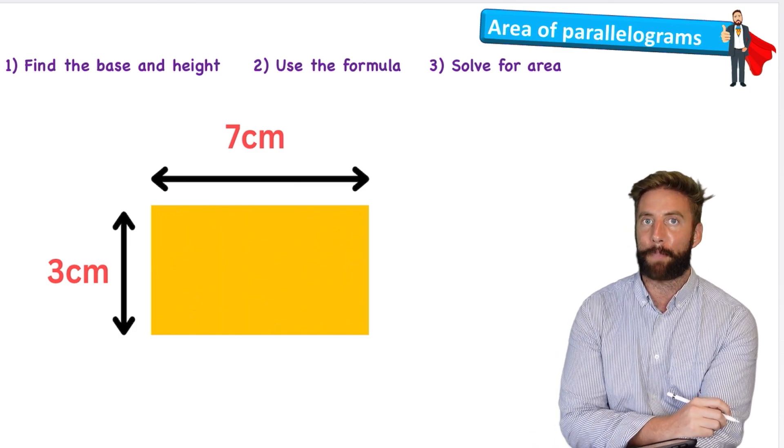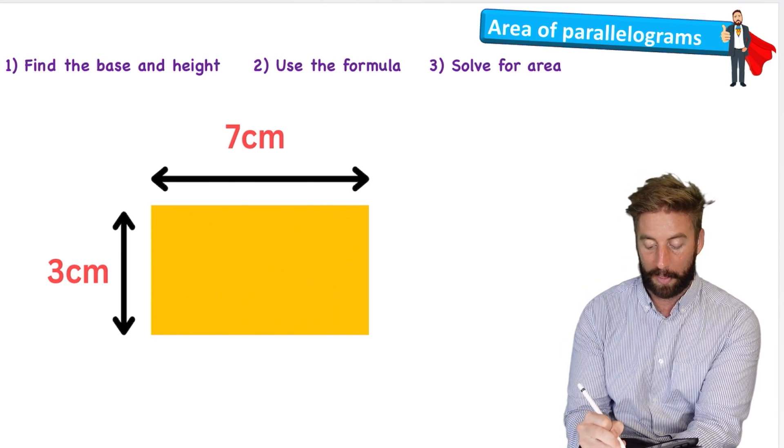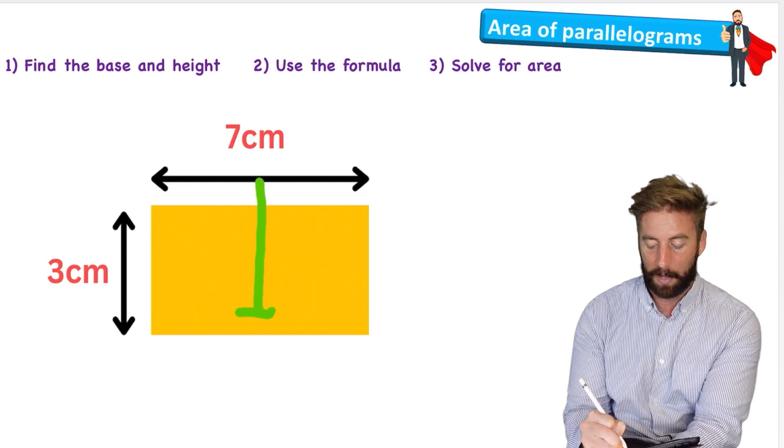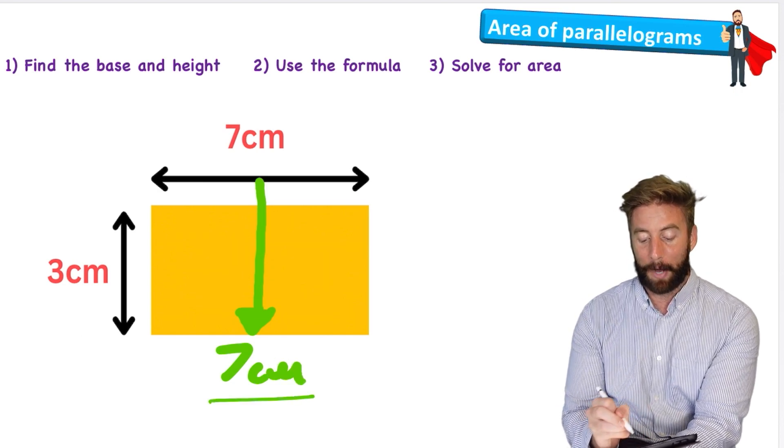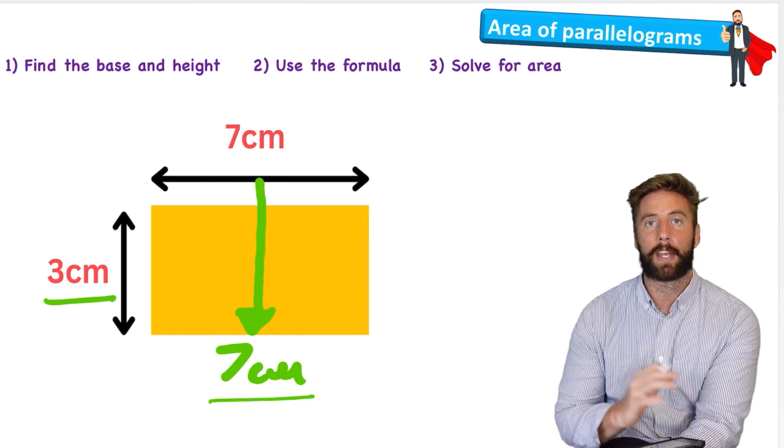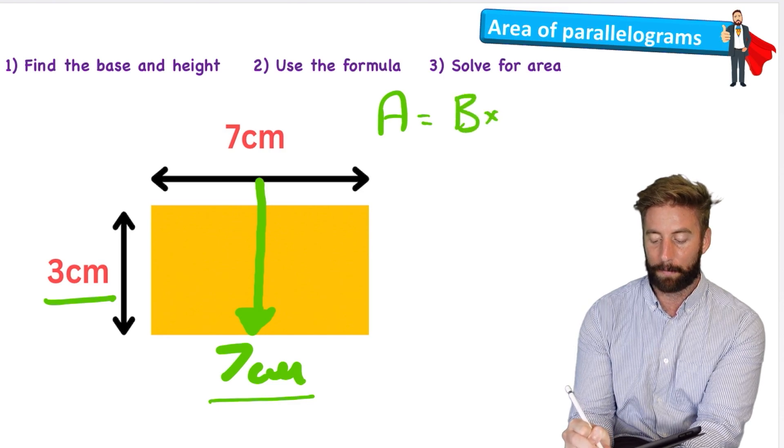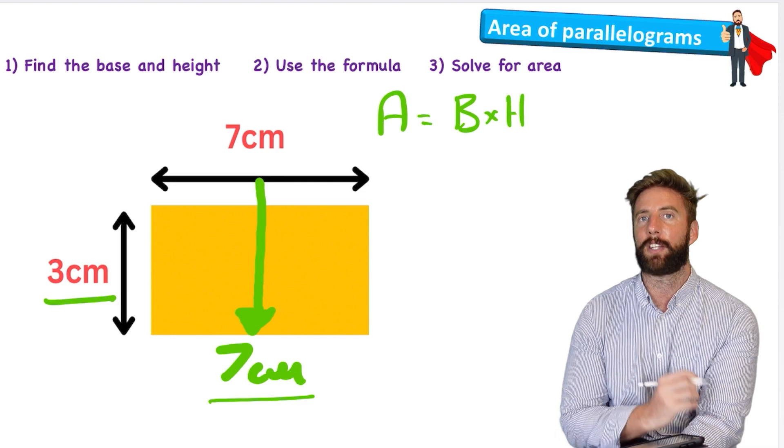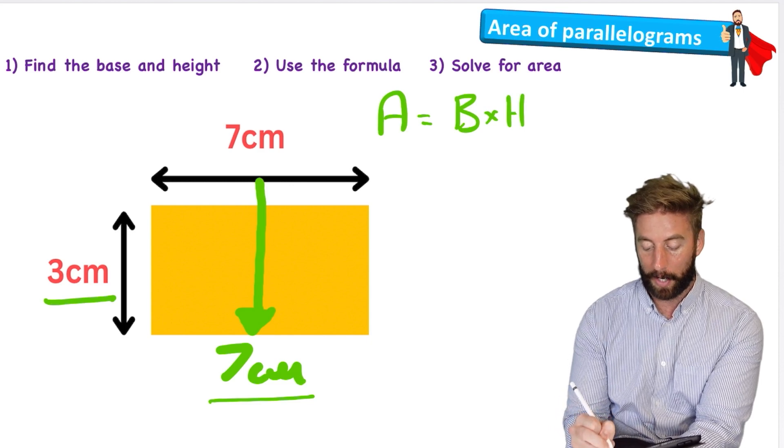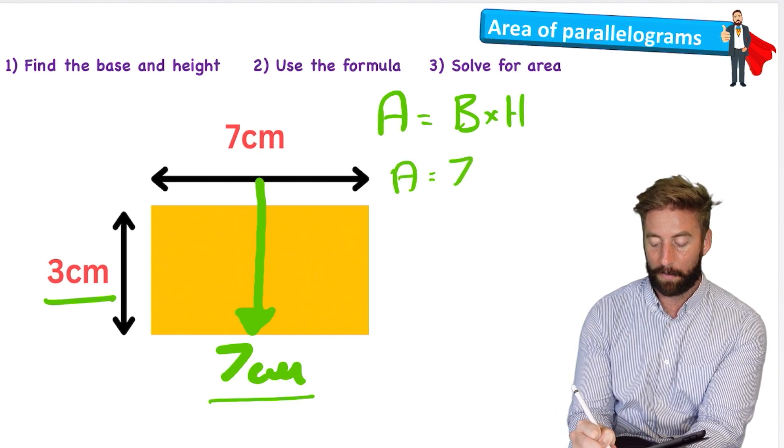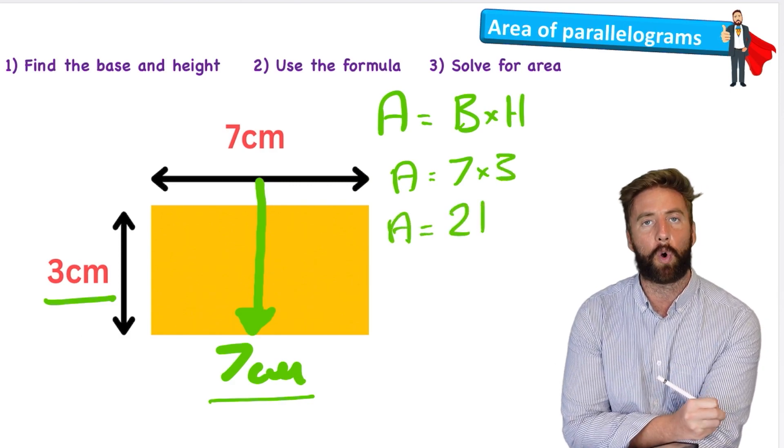So first we need to find the base. Well, the base is obviously what it sits on, the bottom line. So we can use our knowledge here and understand that if this is seven centimeters, then opposite must also be seven centimeters. So my base is seven and my height I can see here is three. Now I'm going to use a formula and the formula is area equals base times height. And in a rectangle like this one, it's super simple because the height is just the side of this width here, so three centimeters.